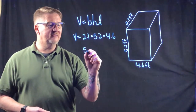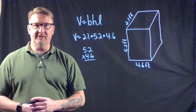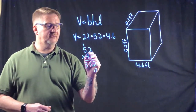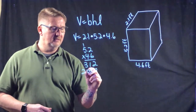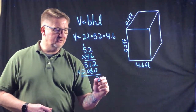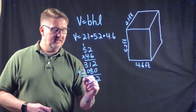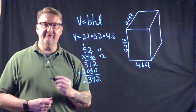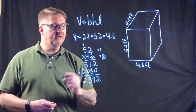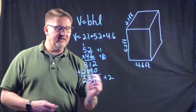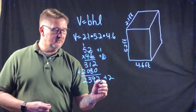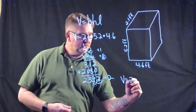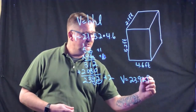I'm going to do 5.2 times 4.6 first, since you can only multiply two at a time. 6 times 2 is 12, 6 times 5 is 31, bring a zero down, 4 times 2 is 8, 4 times 5 is 20 — adding gives 23.92. One decimal place in each factor means two decimal places in the answer, so the volume equals 23.92 feet cubed.